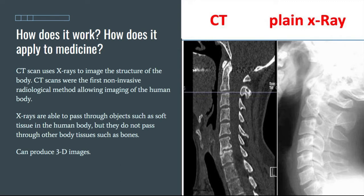CT scans use x-rays to image the structures of the body. They were the first non-invasive radiological method allowing for this type of imaging. X-rays are able to pass through objects such as soft tissue and less dense objects, but they don't pass through other objects of the body, such as bones.